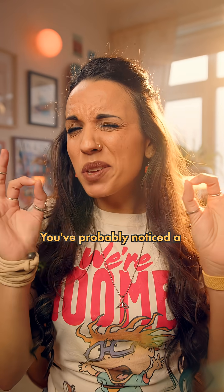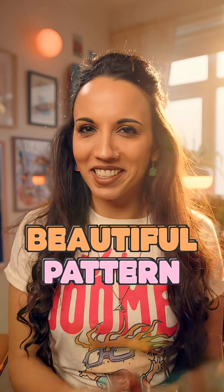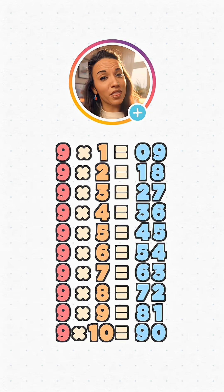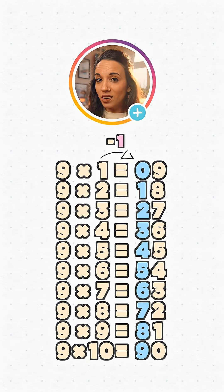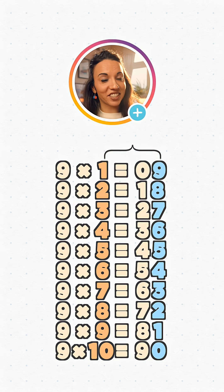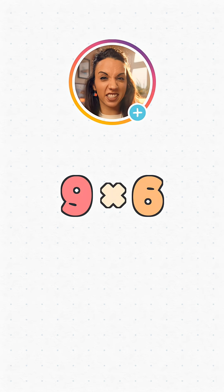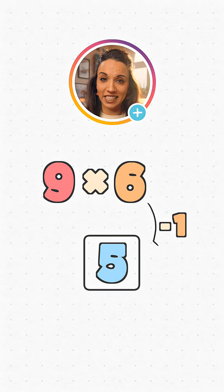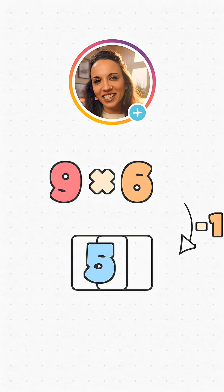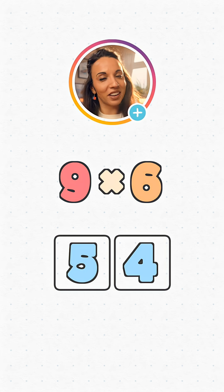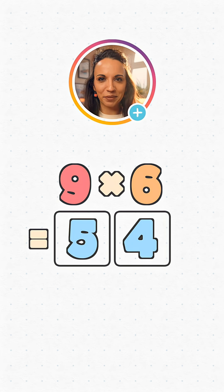You've probably noticed a beautiful pattern in the nine times table from one to ten. The first digit of the answer is one less than the number we're multiplying by, and the second digit is the difference between our number and ten. For example, if we've got nine times six, the first digit is one less than six, which is five, and the second digit is the difference between six and ten, which is four. So nine times six is fifty-four.